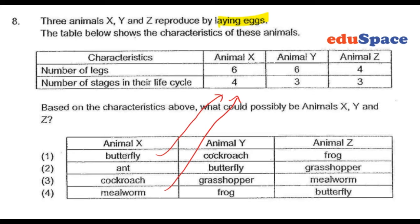Moving on to animal Y, the number of stages in the life cycle is 3 and it has 6 legs. So clearly, a frog is out of the picture because the frog doesn't have 6 legs. Cockroach does have 6 legs.